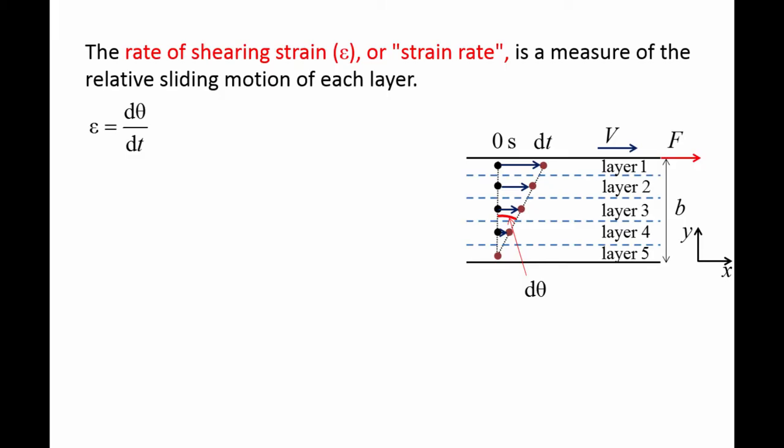Since dt is very small, d theta is very small as well. For small angles, the tangent of the angle is approximately equal to the angle itself, so d theta is approximately tangent d theta.